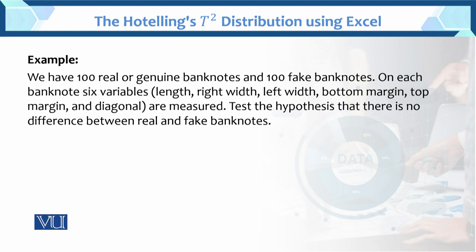The example: we have 100 real and genuine banknotes and 100 fake banknotes — two groups. On each banknote, six variables are measured to determine whether it is real or fake: length, right width, left width, bottom margin, top margin, and the diagonal. If there is a difference in these variables, it means the note is fake; if there is no difference, it is a genuine note.